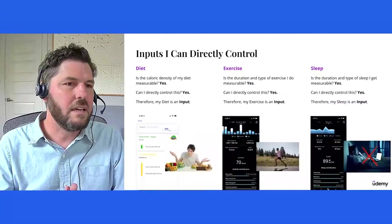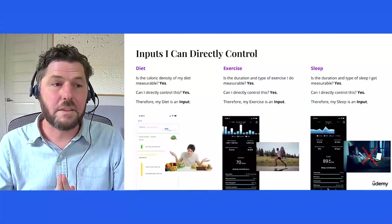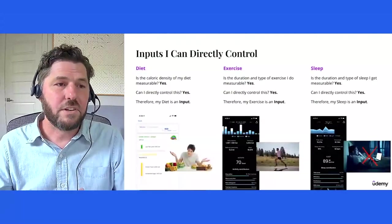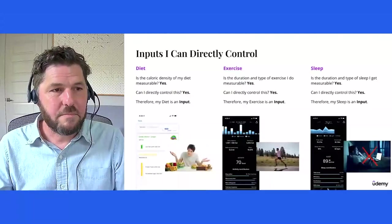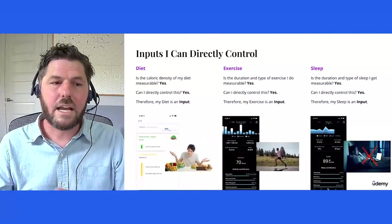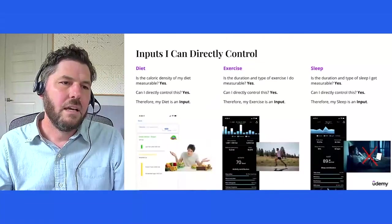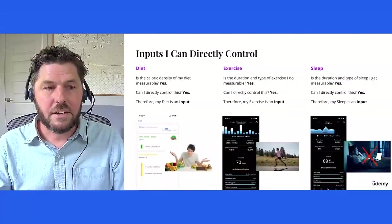And some that came to mind for me are diet, exercise, and sleep. So let's do the same exercise. Let's walk through each and ask ourselves for diet. Is the caloric density of my diet measurable? Yes. Can I directly control this? Yes. All kinds of tactics I can use to manage how, when, and what I'm eating. Therefore, my diet is an input. I can directly control it.